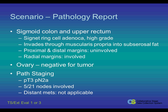On the pathology report, it was shown to be a signet ring cell adenocarcinoma, high grade. It invaded through the muscularis propria into the subserosal fat, with the proximal and distal margins uninvolved and the radial margins involved. The ovary was negative for tumor. The pathologist noted path staging PT3, PN2A, 5 of 21 nodes involved. Distant mets were not applicable since the pathologist was not given any metastatic tissue to examine.